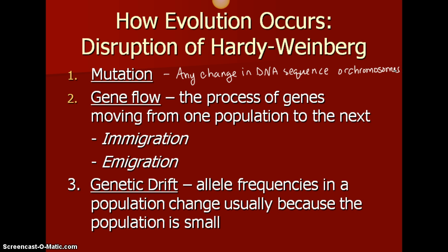Number two is gene flow. This is the process where genes move from one population to the next. When that happens it is in immigration or emigration. Immigration is moving into the population, and emigration is moving out of the population.